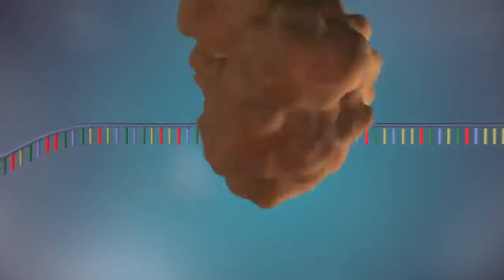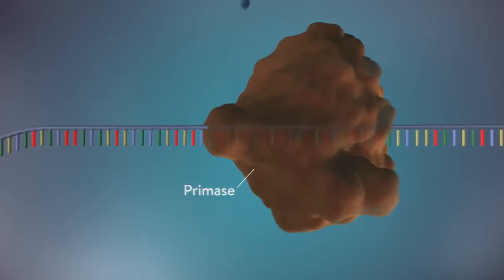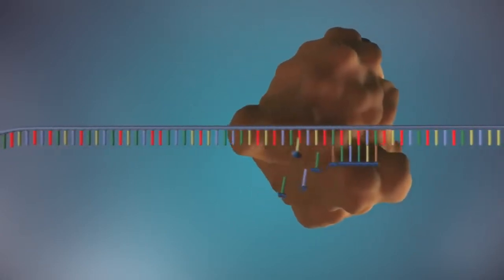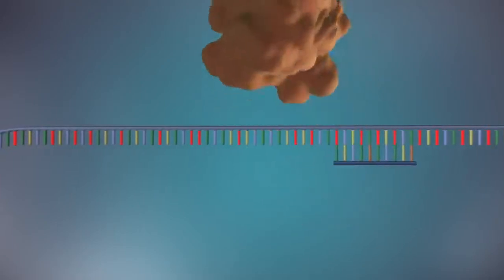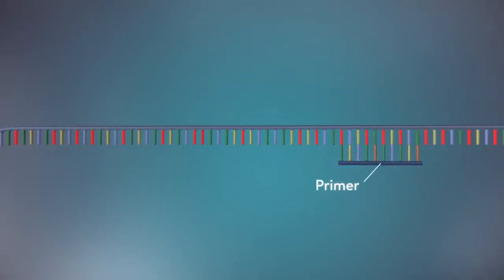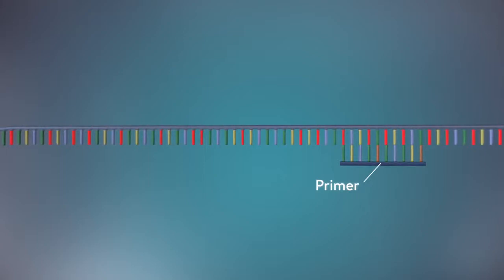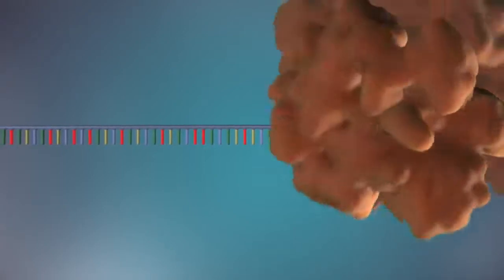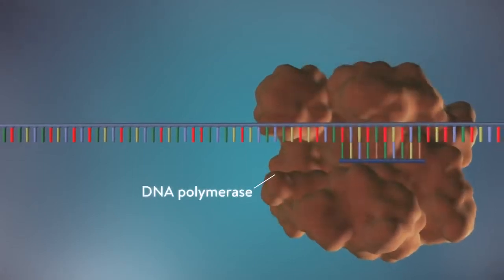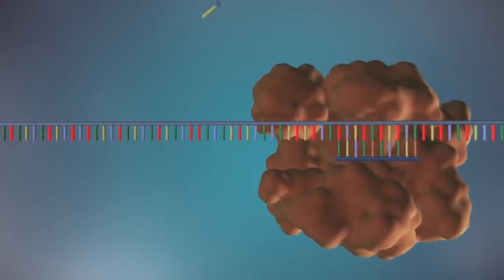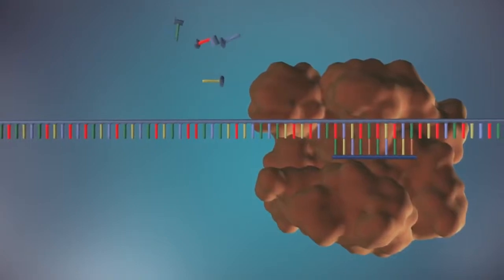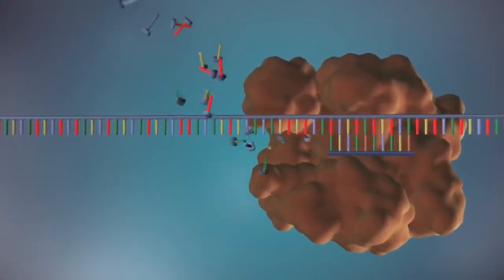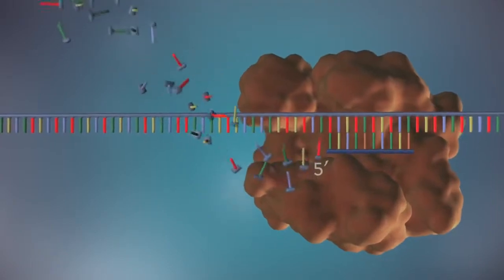An enzyme called primase starts the process. This enzyme makes a small piece of RNA called a primer. This marks the starting point for the construction of the new strand of DNA. An enzyme called DNA polymerase binds to the primer and will make the new strand of DNA. DNA polymerase can only add DNA bases in one direction, from the five prime end to the three prime end.